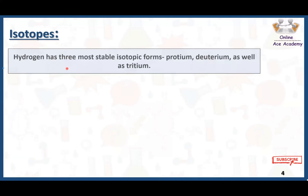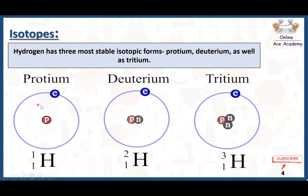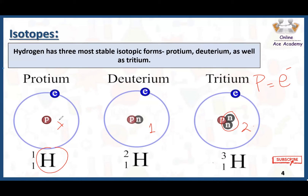Here we have some examples of isotopes. The most common example is hydrogen, which has three most stable isotope forms. The first one is protium. In protium, the number of electrons and the number of protons are both one. For hydrogen, the number shown above is the mass number and the number shown below is the atomic number. The mass number of protium is one, and since mass number equals protons plus neutrons, with only one proton, there are no neutrons in protium.